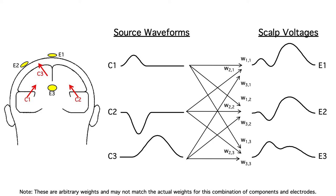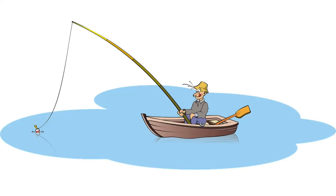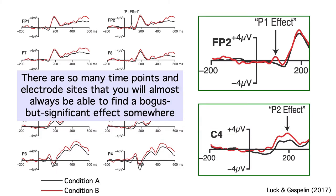A lot of ERP studies are fishing expeditions. The researchers just want to see what happens when they use a given task or manipulation. But if they don't have specific predictions, then they're probably going to look at the data before they decide what time windows and electrode sites to use. That's a recipe for bogus but statistically significant effects.